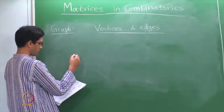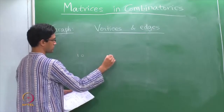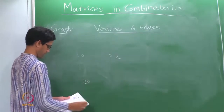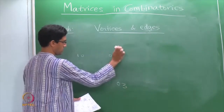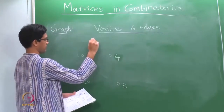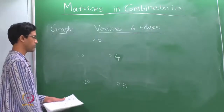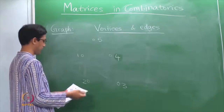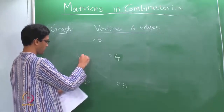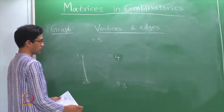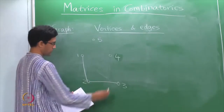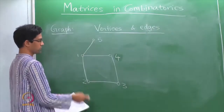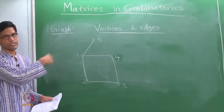Here is a graph which has 5 vertices, labeled 1, 2, 3, 4, and 5. There are 5 vertices which I think of as 5 points in the plane, and between every pair I draw a line or I do not draw a line. For instance, between 1 and 2 there is an edge — think of it as a path which allows you to go from 1 to 2. There is an edge between 2 and 3, between 3 and 4, between 4 and 1, and between 1 and 5.